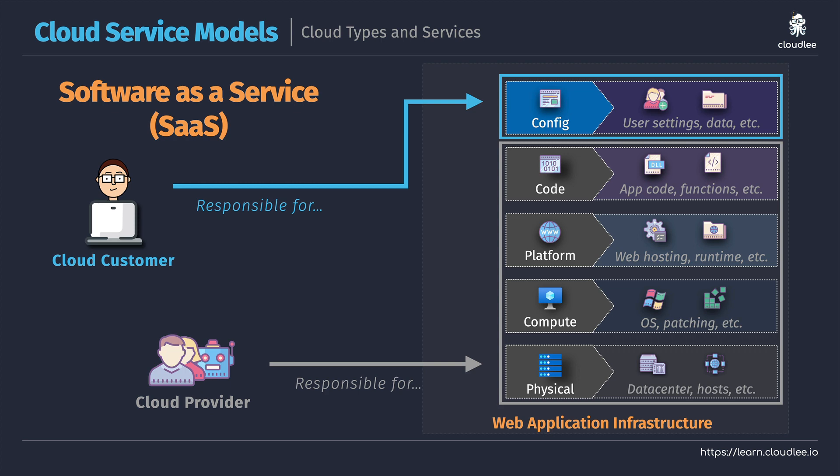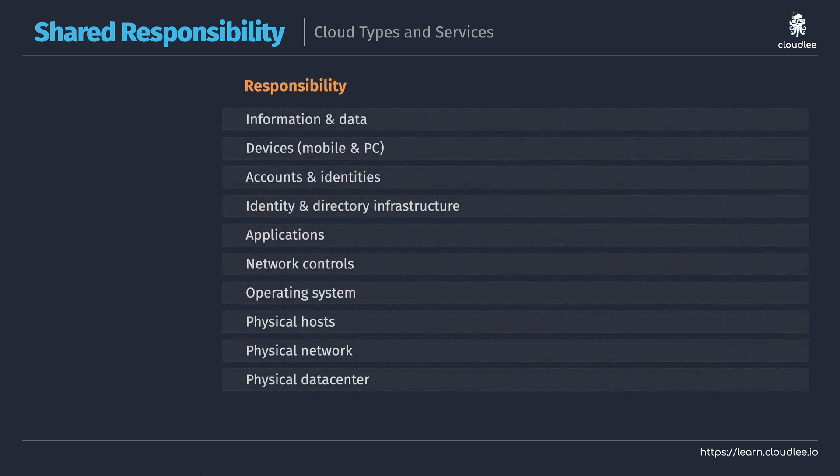That's what we're talking about with the different cloud service models: Infrastructure as a Service where we don't need to manage the infrastructure; Platform as a Service where we don't need to manage everything up through to the platform itself — web hosting, database hosting, whatever that might be; and finally Software as a Service, where you typically just pay per user and only configure the features. Now, since we have these different service models, it's important to understand we'll have different responsibilities — from physical assets through to operating system, applications, identities, devices, information, and data. If you are using an on-premises solution, you as the customer will be responsible for all of that.